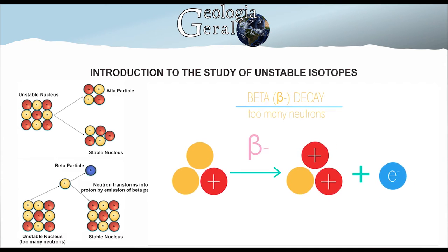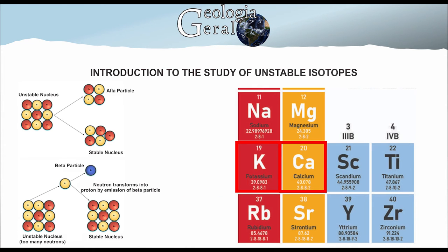In this way, there is an increase of positive charge in the nucleus of the element, but without loss of mass, for example, potassium 19 to calcium 20.